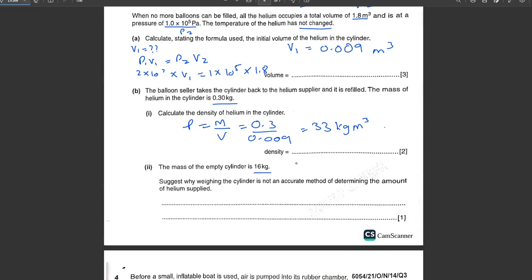The mass of the empty cylinder is 16 kg. The mass of the helium was 0.3 kg. Suggest why weighing the cylinder is not an accurate method of determining the amount of helium supplied. Because the mass of helium is negligible, a small fraction compared to the overall mass of the cylinder.